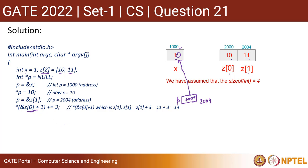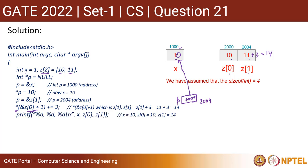So it is now the address of z[1]. The value at z[1] — since we use the dereference operator — is 11, and that has to be added with 3. So this will be added with 3, and this value will become 14. So z[1] will now become 14.